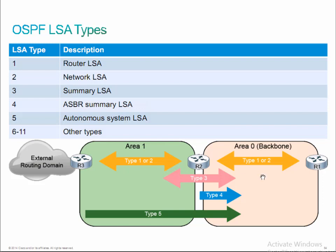This is one of the design elements that allows you to identify a benefit of having a multi-area design: type 1 and type 2 LSAs never leave the area. So having a smaller backbone could potentially produce less traffic. We'll talk more about that as we go through this lesson.